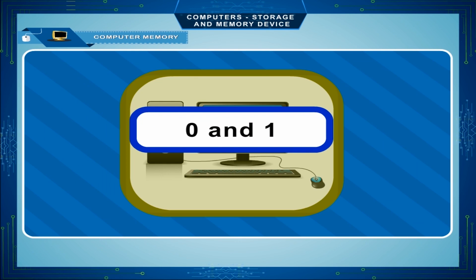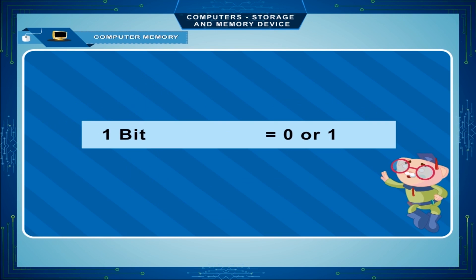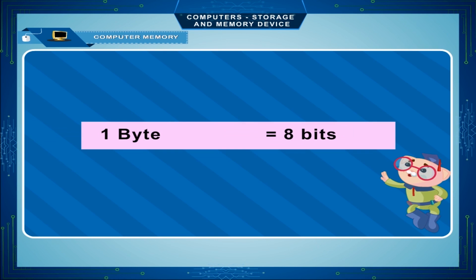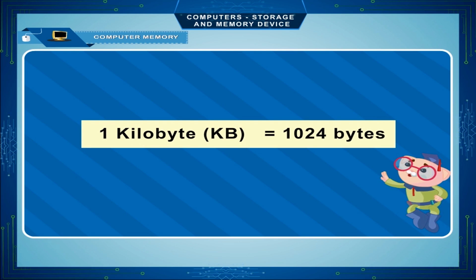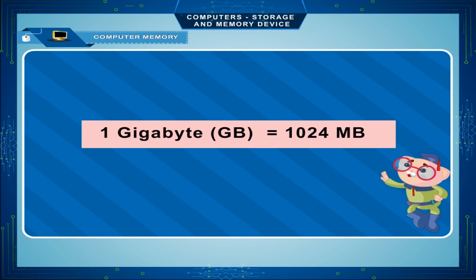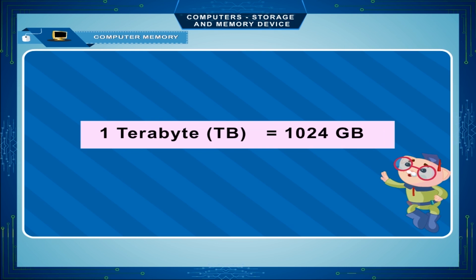Binary 0 and 1 represent two states: off and on. One bit equals 0 or 1. One nibble equals 4 bits. One byte equals 8 bits. One kilobyte (KB) equals 1024 bytes. One megabyte (MB) equals 1024 KB. One gigabyte (GB) equals 1024 MB. One terabyte (TB) equals 1024 GB.